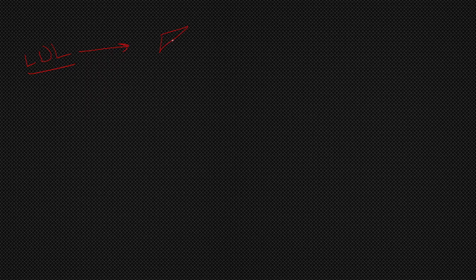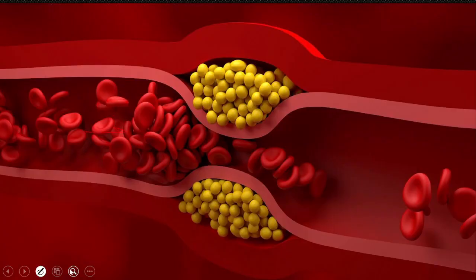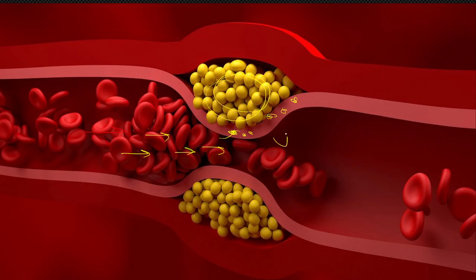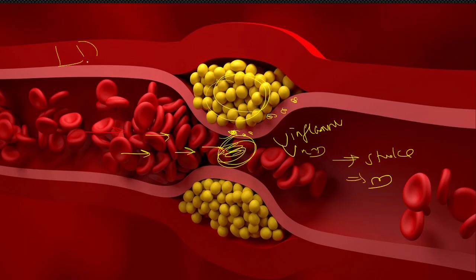LDL is called 'bad cholesterol.' Why? Because LDL takes cholesterol and phospholipids — with less triglyceride — from the liver and delivers them to all parts of the body, including blood vessels. If it gets oxidized, it may get deposited and cause occlusion of blood vessels. Due to endothelial injury or genetic predisposition, LDL starts accumulating, induces inflammation, and leads to further deposition — suddenly occluding the blood vessel, thereby leading to stroke and heart attack. That is why it is called bad cholesterol.